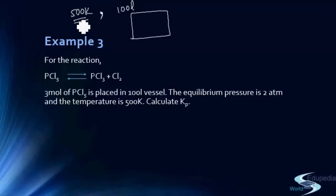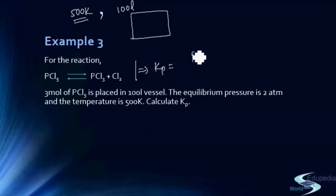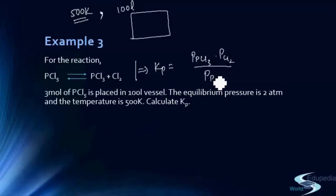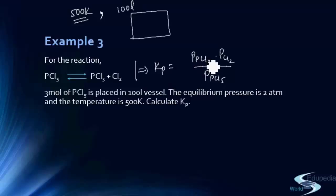For calculating Kp, the expression is: Kp equals partial pressure of PCl3 at equilibrium times partial pressure of Cl2 at equilibrium, divided by partial pressure of PCl5. We know that partial pressure can be calculated as mole fraction multiplied by total pressure, so we need to find mole fractions at equilibrium.